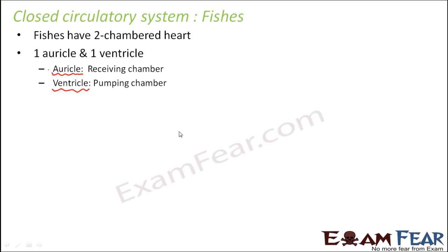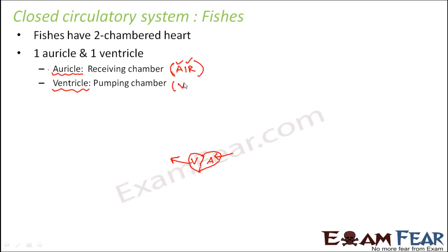This is the heart of a fish, divided into two chambers: auricle and ventricle. The auricle is the receiving chamber — it receives blood — and the ventricle is the pumping chamber — it pumps blood out. A useful memory tip: AIR stands for Auricle Is Receiving chamber, and VIP stands for Ventricle Is Pumping chamber.